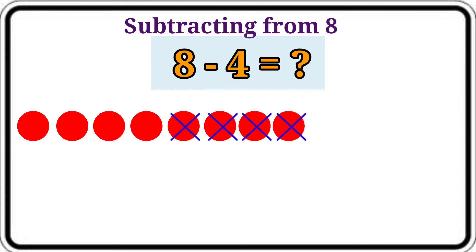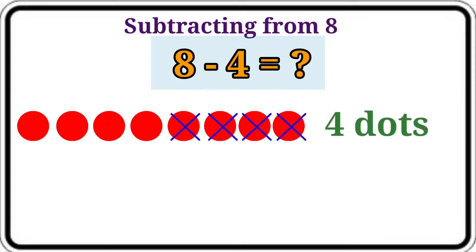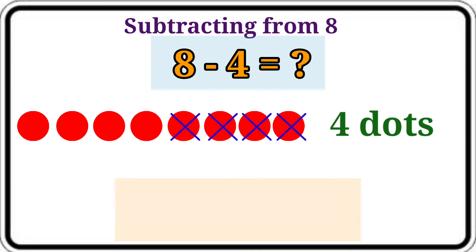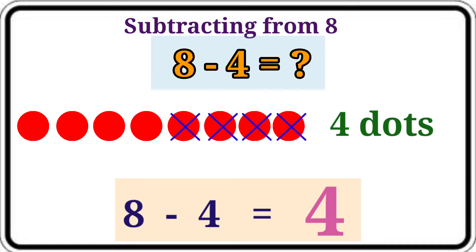Then to find the answer: 8 minus 4. Let's count the dots that are not crossed: 1, 2, 3, 4. Here 4 dots. Let's write them. 8 minus 4 is equal to 4.